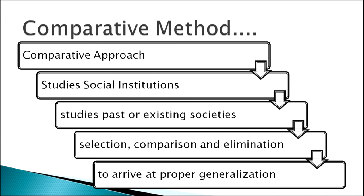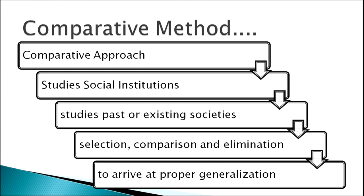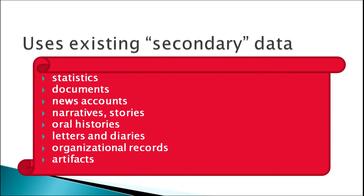The comparative approach studies social institutions, past or existing societies — we can compare both. It also selects, compares, and eliminates, and arrives at proper generalization. The comparative method uses existing secondary data like statistics, documents, news accounts, narratives, stories, oral histories, letters and diaries, organizational records, and artifacts.